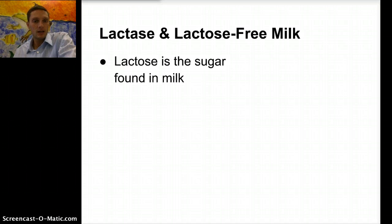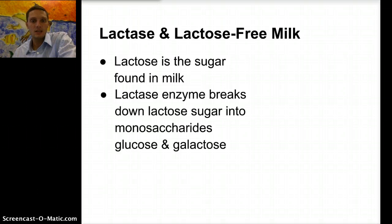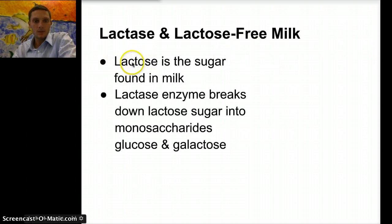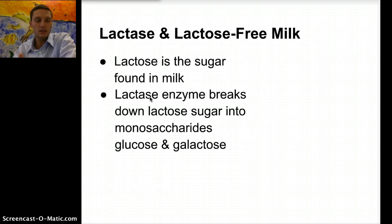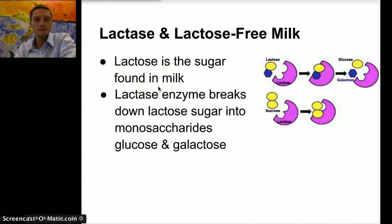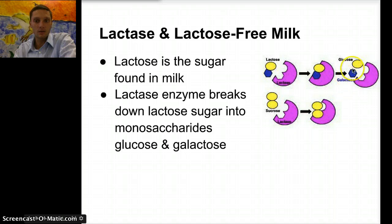Lactose is the sugar found in milk, and lactase is the enzyme that breaks down lactose sugar into monosaccharides of glucose and galactose. You'll notice this enzyme ends in -ase — usually the enzyme name is very similar to the name of what it's breaking down, except the ending is -ase. Here's our lactase enzyme in the pink and our lactose sugar fitting on the active site — our lock and key, our induced fit. Lactase then breaks apart lactose. Sucrose, for example, does not fit with the lactase enzyme, so lactase cannot break apart sucrose.